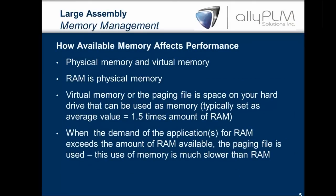There are two types of memory: physical and virtual. RAM is a type of physical memory which is accessed very quickly by your CPU. Virtual memory, like your paging file, is based on your hard drive and can be used as memory. When a program like Solid Edge demands more RAM than is available, the paging file is used instead — and it's much slower than physical memory. So anytime you have to swap to virtual memory, you're going to run a lot slower.